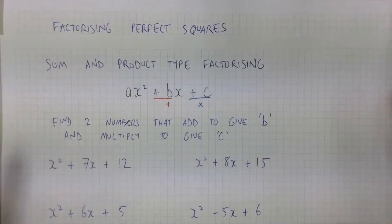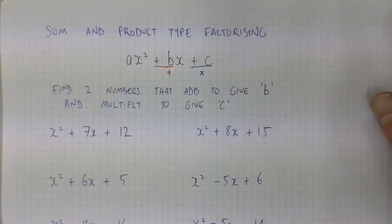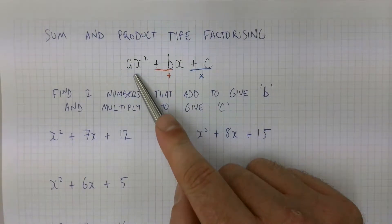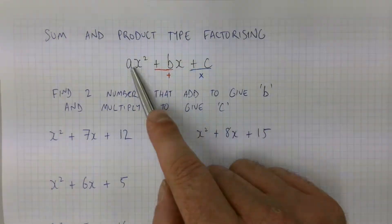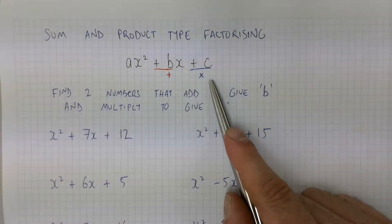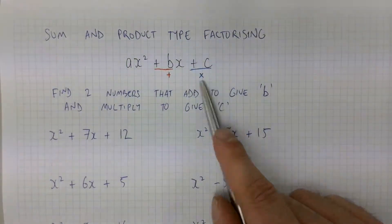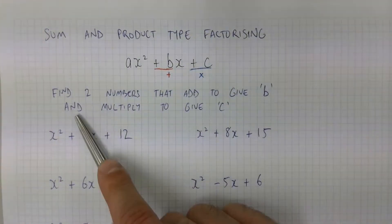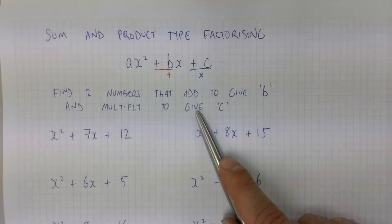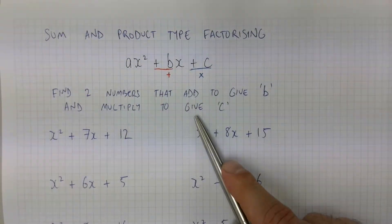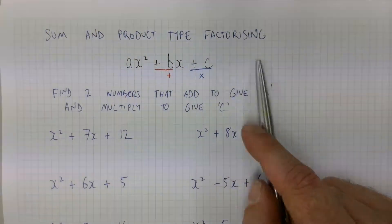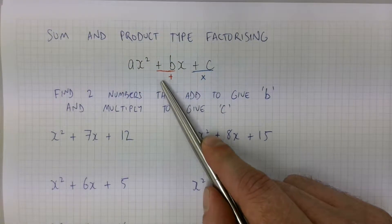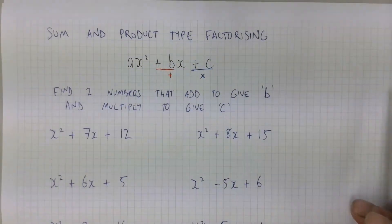With sum of products type factorizing, you'll notice that the original expression will have three terms. Let's put it in the form of the quadratic equation ax² + bx + c. When we factorize these expressions, we're looking for two numbers that add to give the value of b and multiply to give the value of c. Break down that value of c, work out what two factors of c are, and check if they add to equal b.